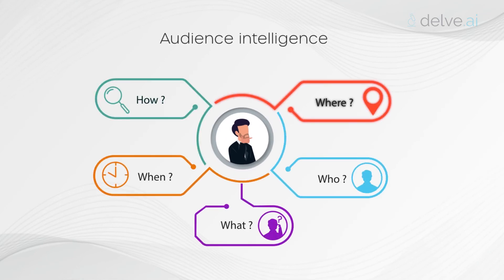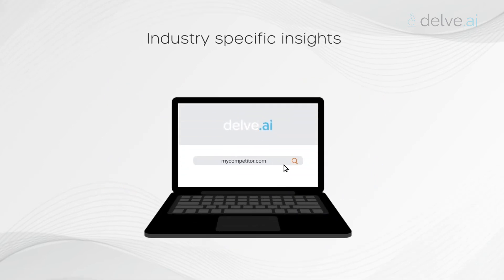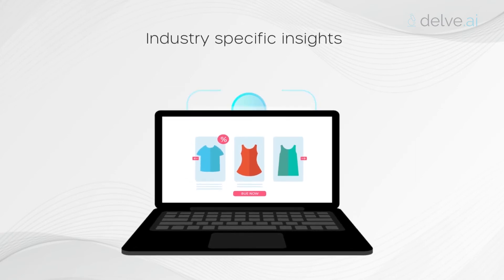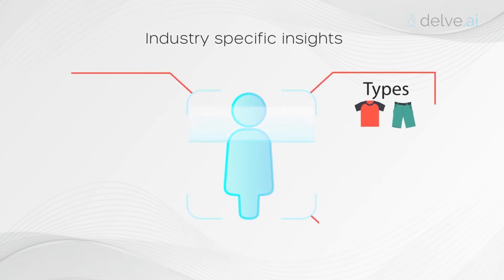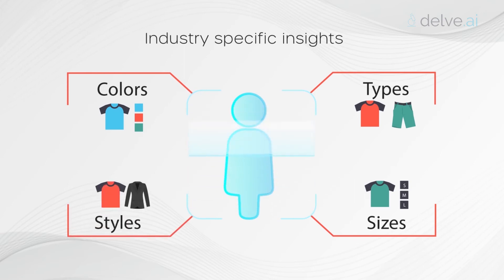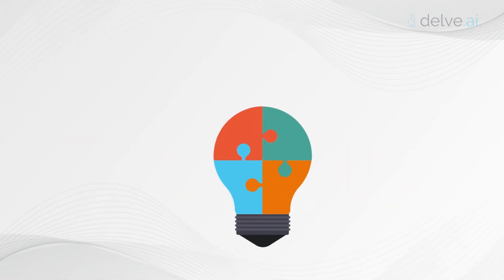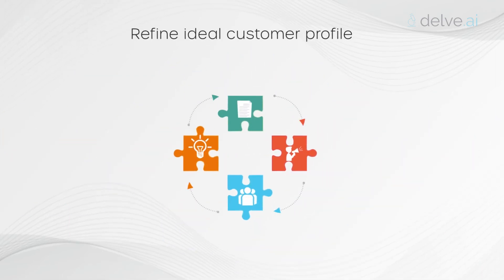You get audience intelligence in terms of how, where, when, who, and what. Further, the tool generates unique insights specific to your industry. For example, for a business in the apparel industry, you can see the popular apparel types, colors, sizes, materials, and styles on your competitor website, based on analysis of searches and views.